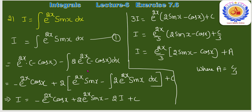∫e²ˣ·cos x dx पर second time by parts: e²ˣ·sin x − 2∫e²ˣ·sin x dx। Substitute back: I = −e²ˣ·cos x + 2[e²ˣ·sin x − 2I]।